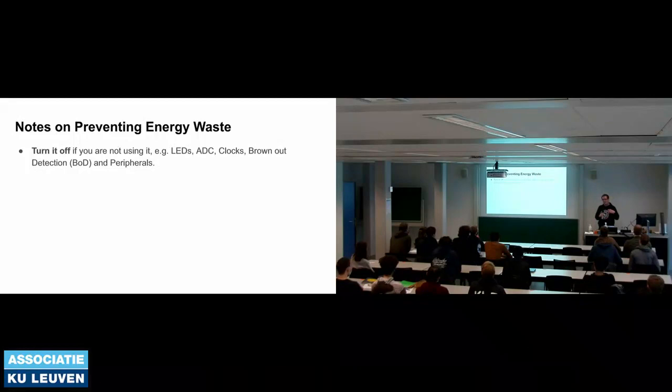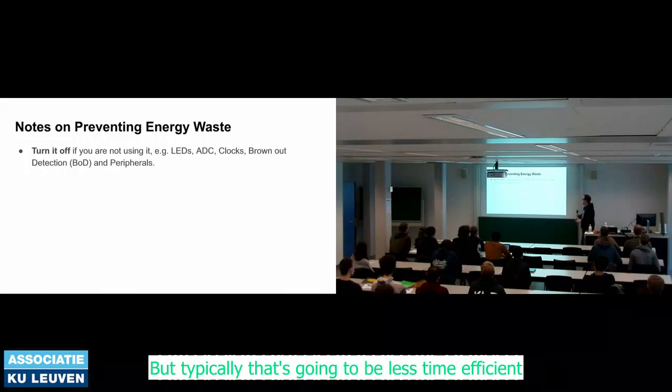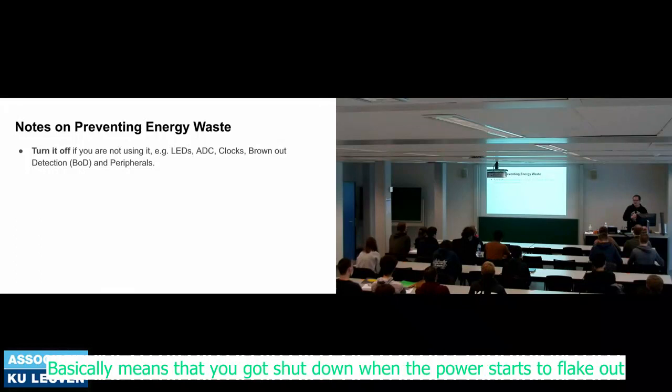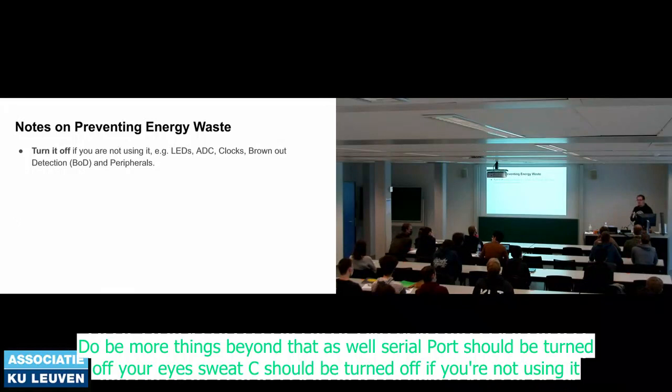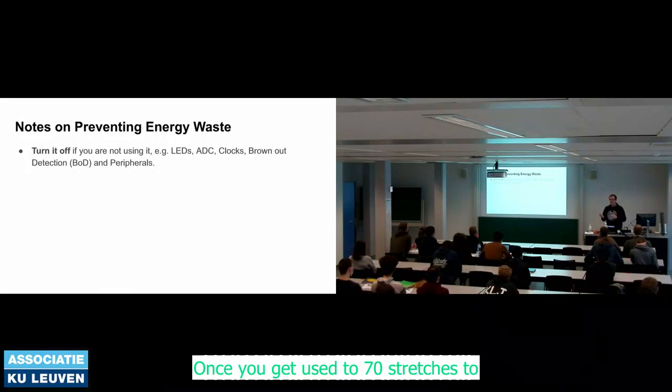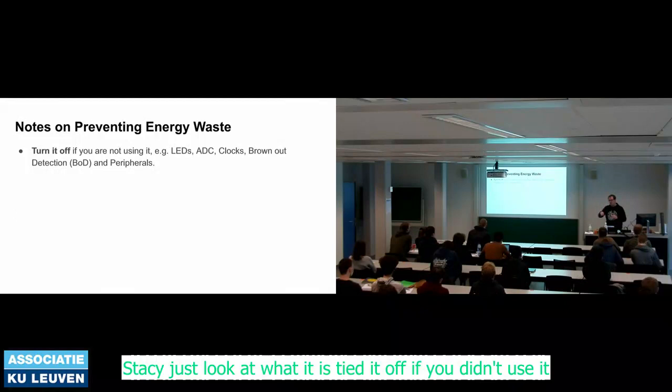Brownout detection uses the ADC — you get shut down when power starts to fluctuate. The right way is to go through documentation for the board and OS, but typically that's less time-efficient. Turn off your serial port and I2C if you're not using them — look at the register for those peripherals and just turn them off. Once you get used to setting those registers it's just grunt work: look at what it is, turn it off if you didn't use it.